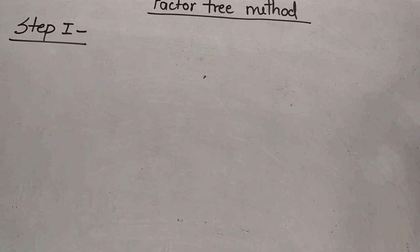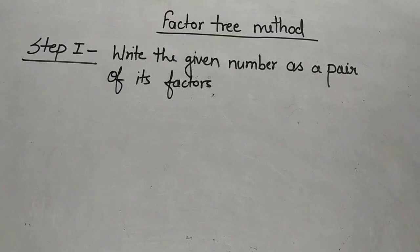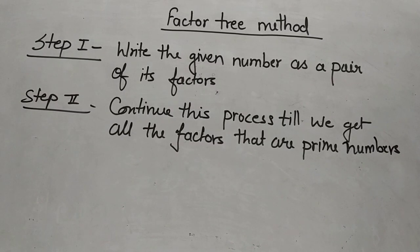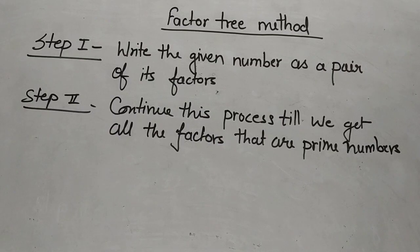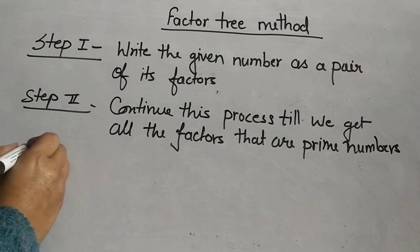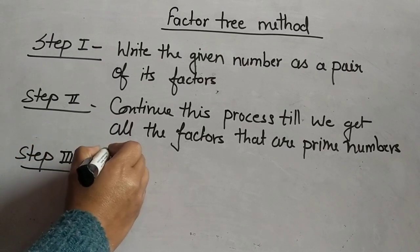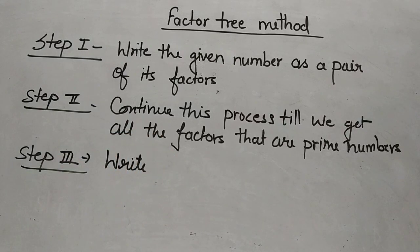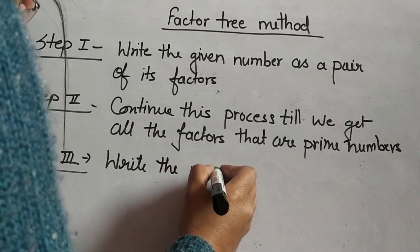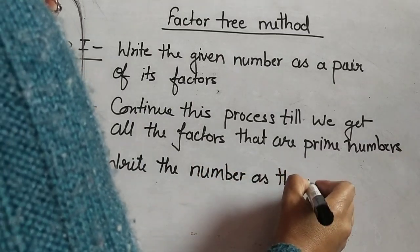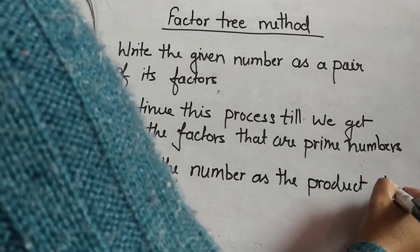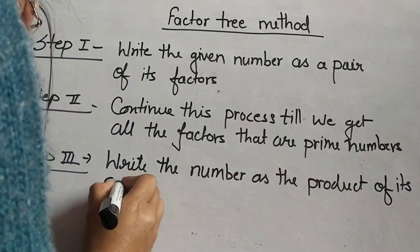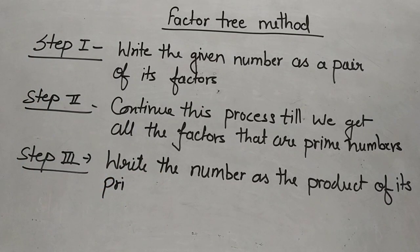In this method also we follow three steps. Step 1: Write the given number as a pair of its factors. Step 2: Continue this process until we get all the factors that are prime numbers. Step 3: Write the prime numbers as the product — the number is the product of its prime factors.